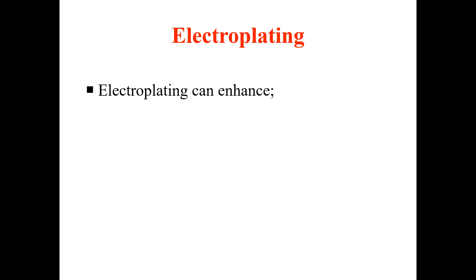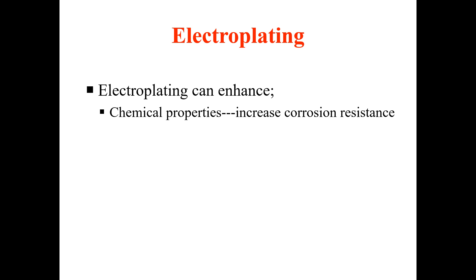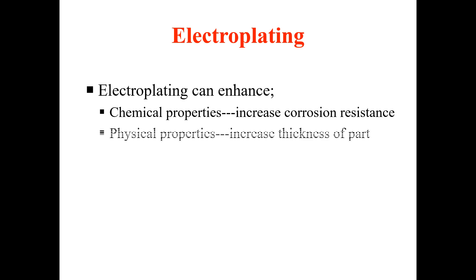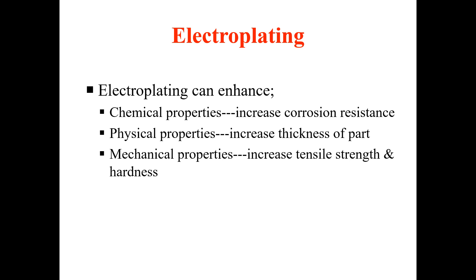Electroplating is a very important process that can enhance chemical properties — specifically it increases corrosion resistance, acting as a corrosion-protective coating for materials. Physical properties can also be enhanced; electroplating can increase the thickness of a part, thereby enhancing relevant physical properties. It can also enhance mechanical properties, with examples including tensile strength and hardness, both of which can be increased through electroplating.